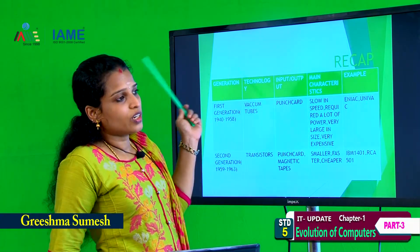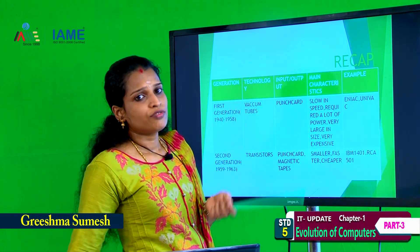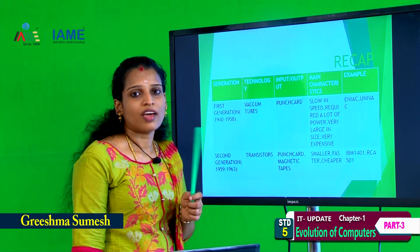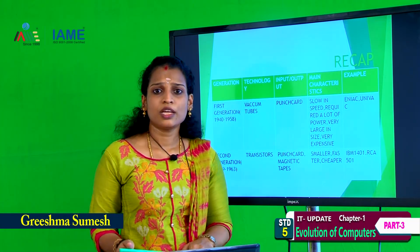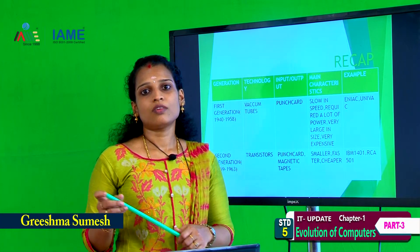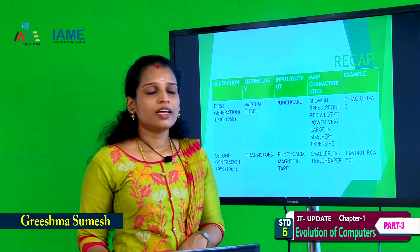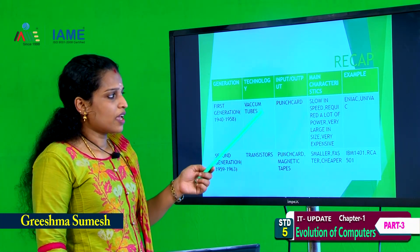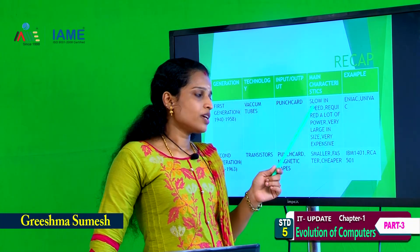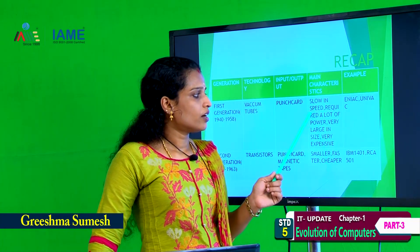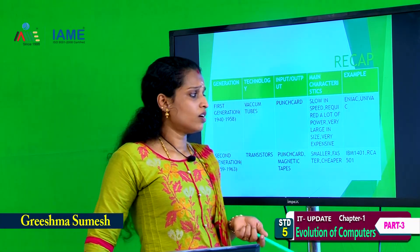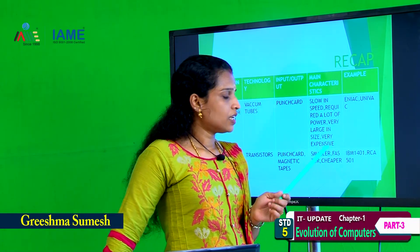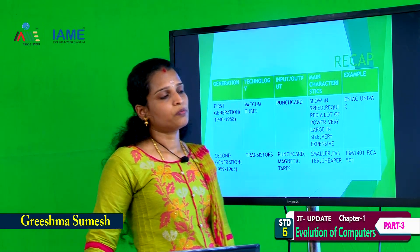First generation computer main characteristics: slow in speed, required a lot of power, very large in size, very expensive. Examples: ENIAC and UNIVAC.